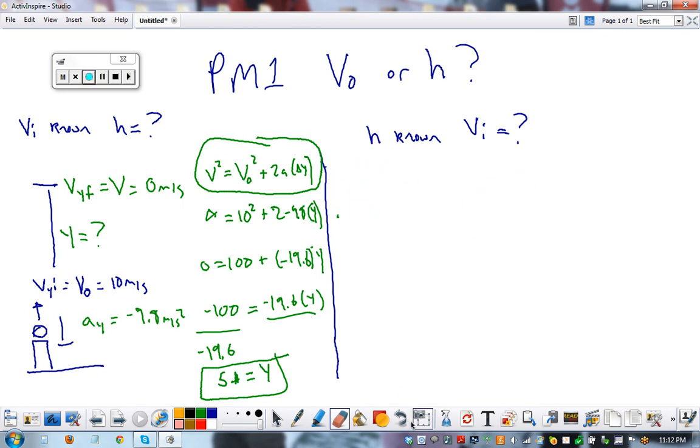What if it's the opposite? What if we know the height equals 13 meters, and I want to know what was the initial velocity? I also know the acceleration equals negative 9.8. I know velocity at the top equals zero. What formula has all three of those?